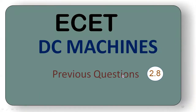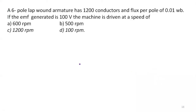We will be dealing with DC machines problems. In our previous problems we solved similar systems. A 6-pole lap wound armature has 1200 conductors. So Z equals 1200, number of poles equals 6.